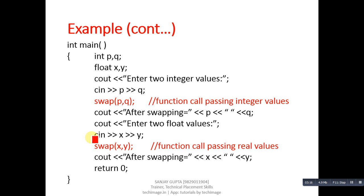Then cout displays 'enter two float values', cin reads values into x and y, and the second time I called the swap function where values of x and y are passed. This time the definition that receives two float values will be called automatically, then cout will print the swapped values. With this example you should now understand the concept of function overloading.